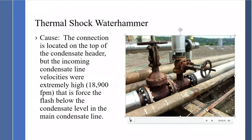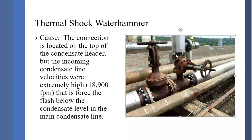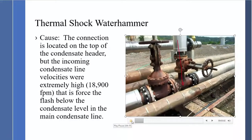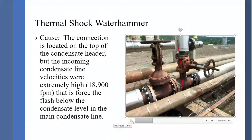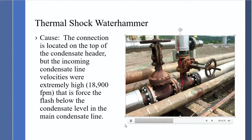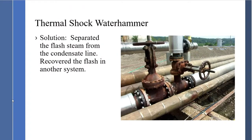Here is a case study where the connection was piped into the top of the condensate header, but the velocities were so great that the flash steam was being pushed below the water level, causing the bubble to collapse. Calculations showed velocities up around 18,900 feet per minute, forcing flash steam below the condensate level and causing severe damage to flanges and piping. Disconnecting a condensate line reduced the velocity to about 3,000 feet per minute and resolved the water hammer.